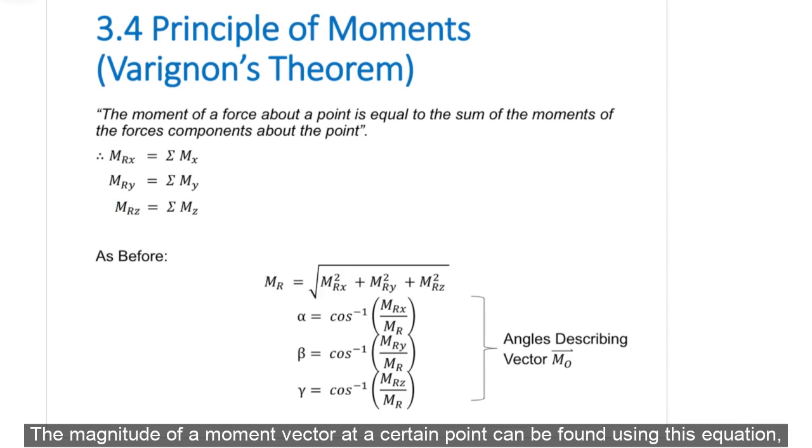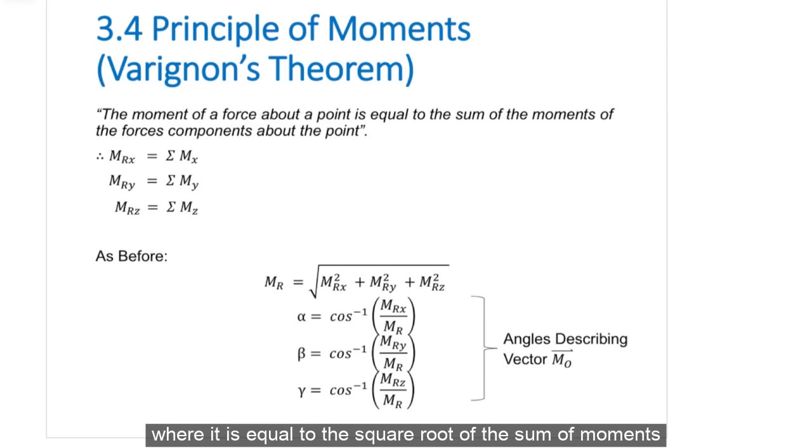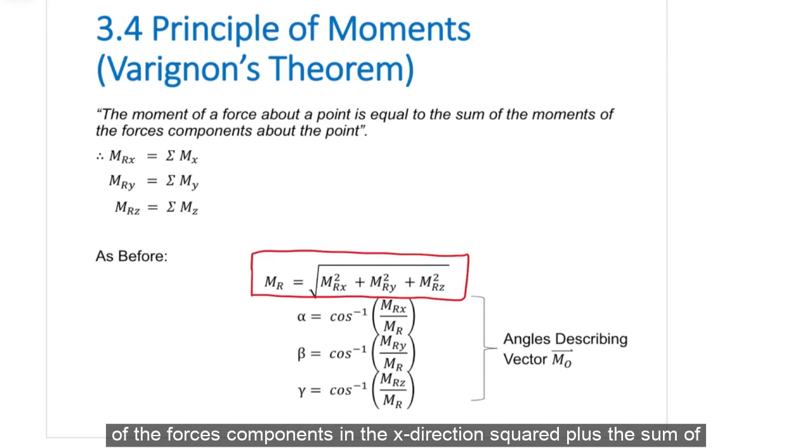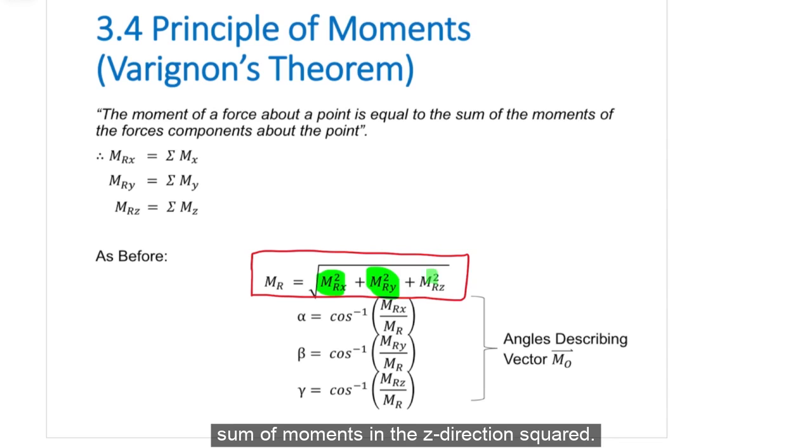The magnitude of a moment vector at a certain point can be found using this equation, where it is equal to the square root of the sum of moments of the forces components in the x-direction squared plus the sum of moments of the force components in the y-direction squared plus the sum of moments in the z-direction squared.